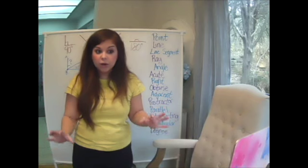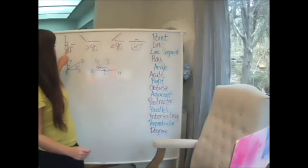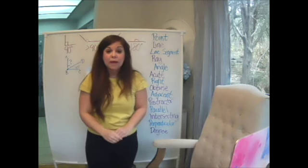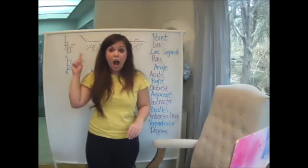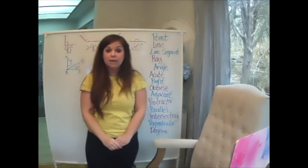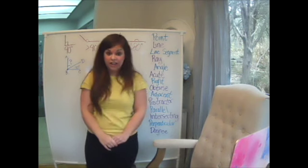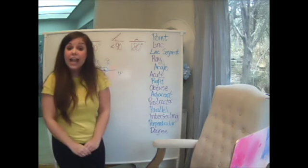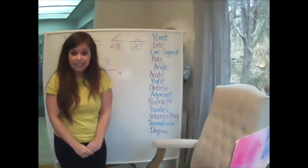So a quick review. A right angle has a measurement of 90 degrees and obtuse, remember, hang loose, obtuse angle has a measurement that's greater than 90 degrees and an acute angle has a measurement that's less than 90 degrees.